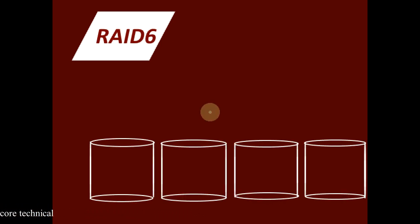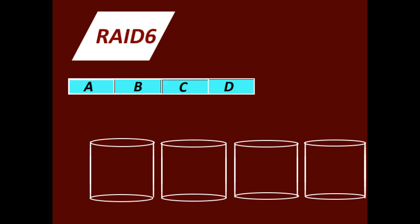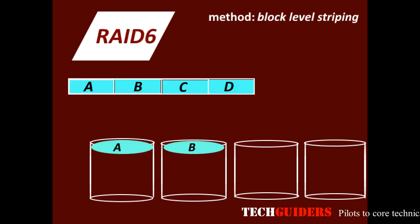RAID 6 is somewhat similar to RAID 5. It uses block-level striping. The data to be written onto the disk will be divided into blocks and striped across the disk.